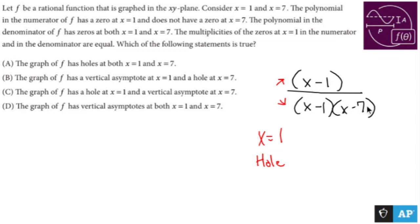Now since I have x minus 7 in the denominator and no x minus 7 in the numerator, that means that at x equals 7, I have a vertical asymptote.